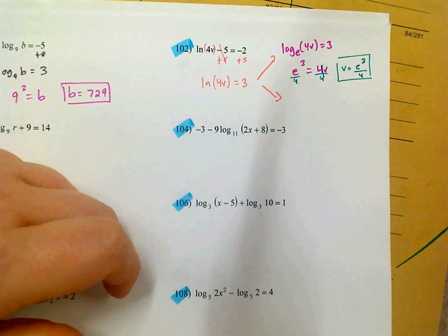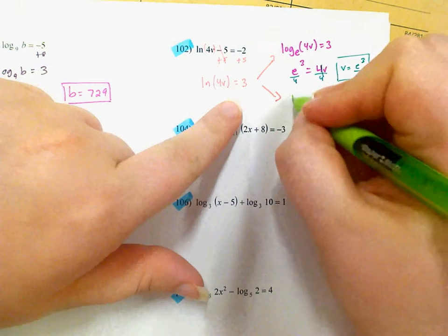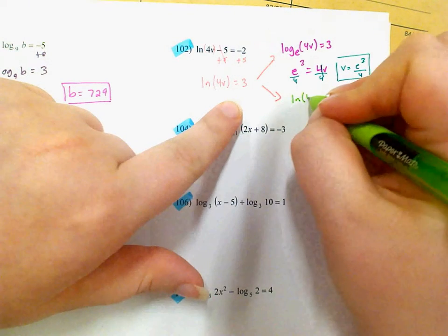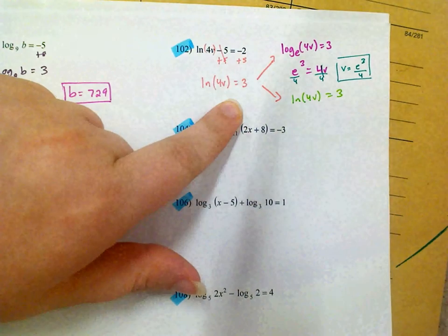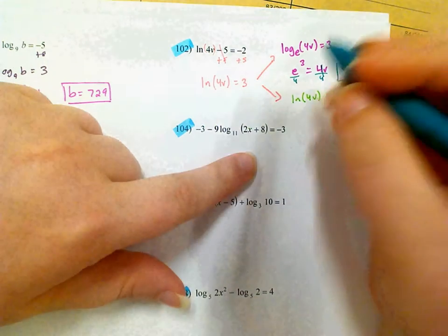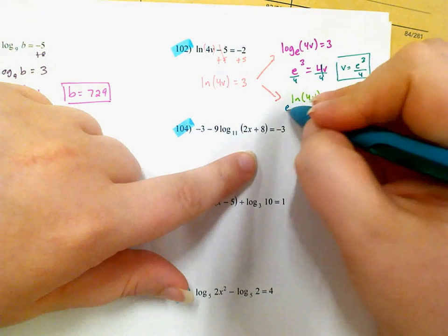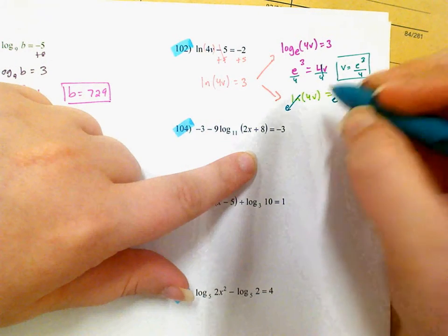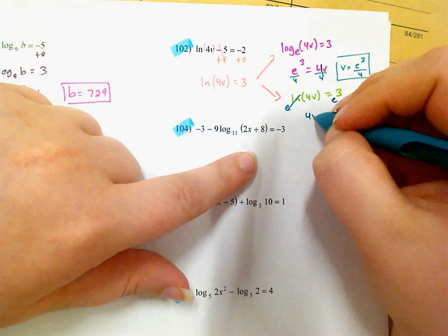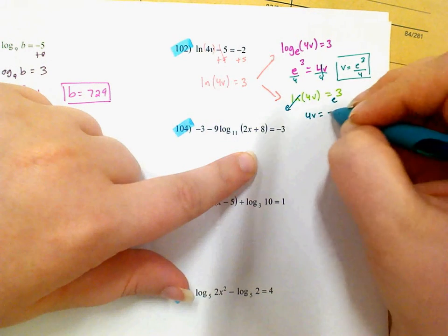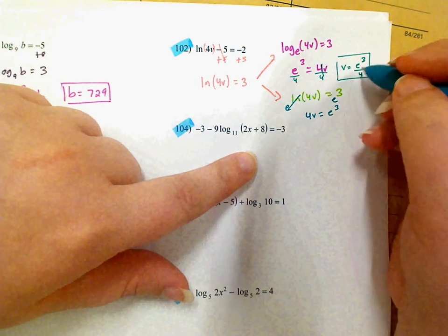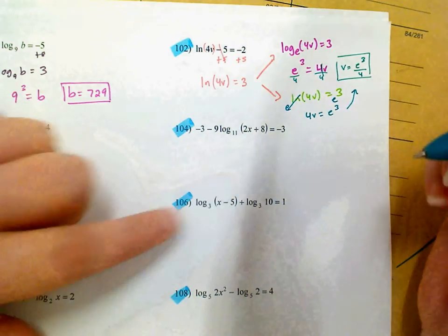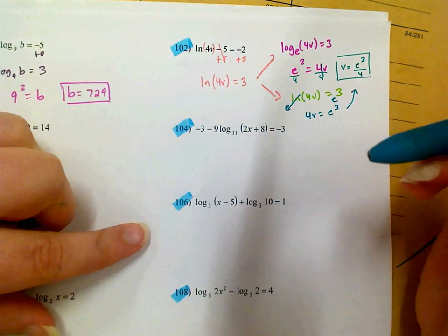The other option is that when you have natural log of 4v equals 3 — in the same way that natural log cancels out e, e cancels out natural log — if I just raise both sides to the power of e, then I get 4v equals e cubed, and then just divide by 4. So either way, the answer is e cubed divided by 4.